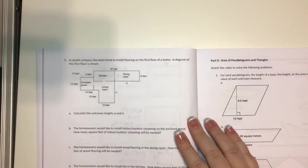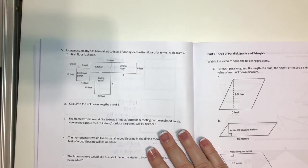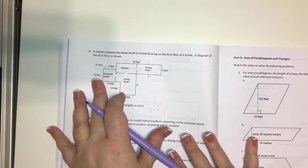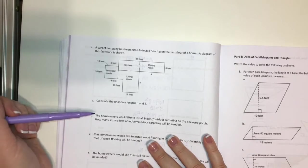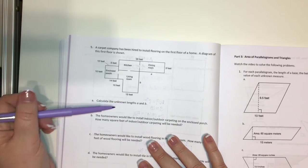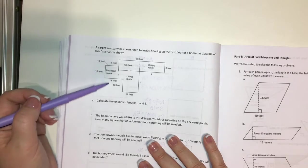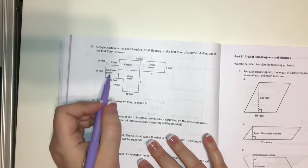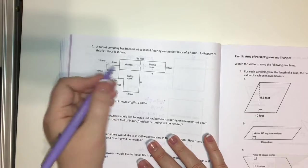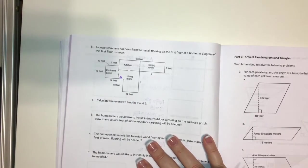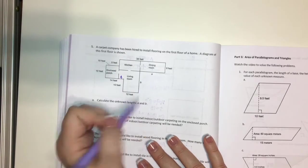Got a couple more problems over here. Things get a little more complicated on this one. We've got this big composite figure. A composite figure is just a figure that's made up of more than one shape. So we've got lots of squares and rectangles here. So the first thing it says is calculate the unknown lengths A and B. So how can we figure out what A is? I know that this whole length here is 14, but I know this part of it's going to be 10. That leaves this right here as a 4.